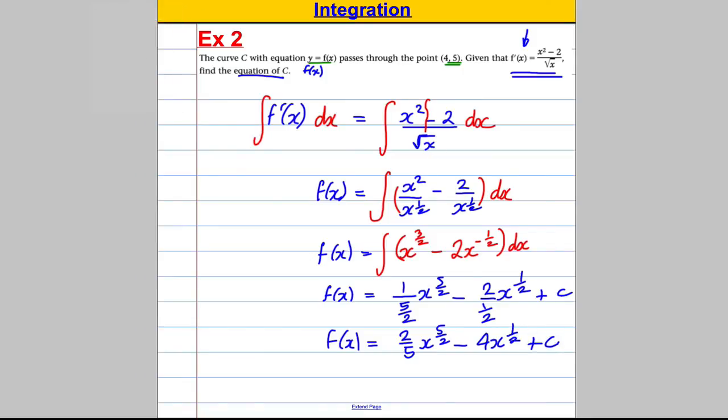Let's tidy this up. f of x is going to be equal to, 1 divided by 5 over 2 is 2 fifths, x to the 5 over 2. 2 divided by half is equal to 4, so that's subtract 4x to the half, plus constant. Now we nearly are done. The only thing is, we don't know the constant, which we should be able to find.